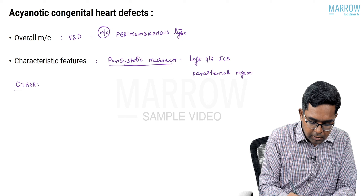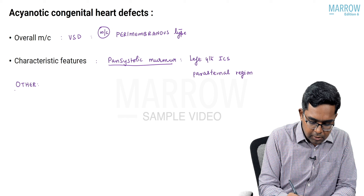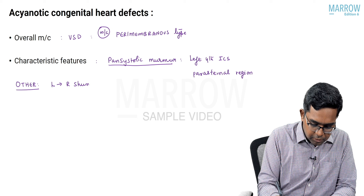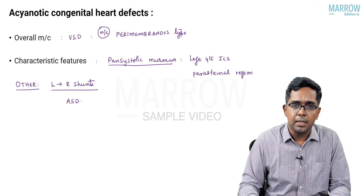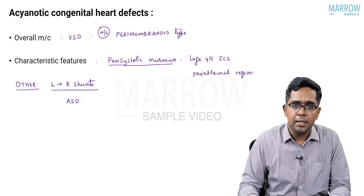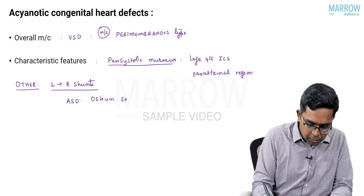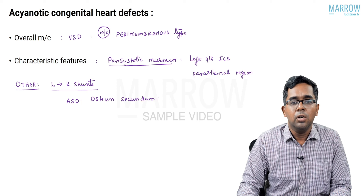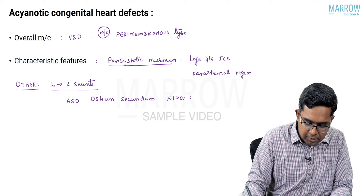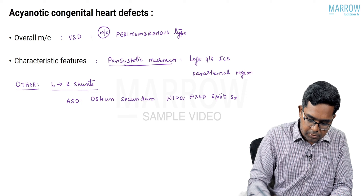Other types of acyanotic heart defects include other examples of left-to-right shunts, which include atrial septal defect. ASD is divided into ostium primum ASD and ostium secundum ASD, of which ostium secundum ASD is the more common type. The characteristic feature of atrial septal defect on examination is wide fixed splitting of the second heart sound.